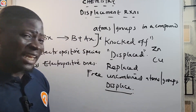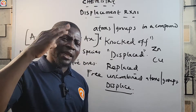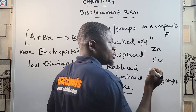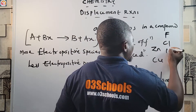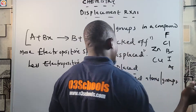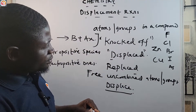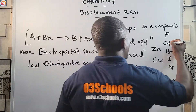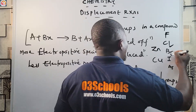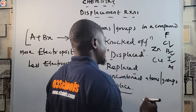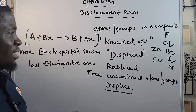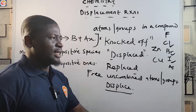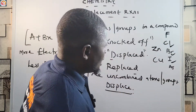Even for non-metals like the halogens — group seven elements — the more electronegative ones can knock off the less electronegative ones. For halogens: fluorine is the most electronegative, then chlorine, bromine, iodine, astatine, and so on. Fluorine can knock off chlorine from solution, chlorine can knock off bromine, and so forth. Electronegativity decreases down the group.